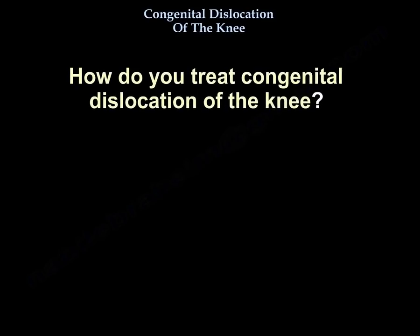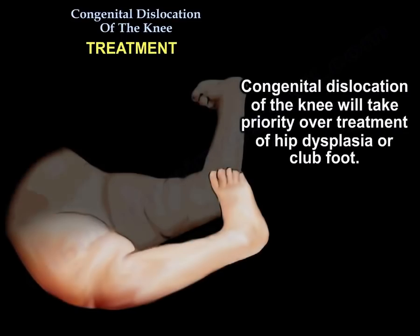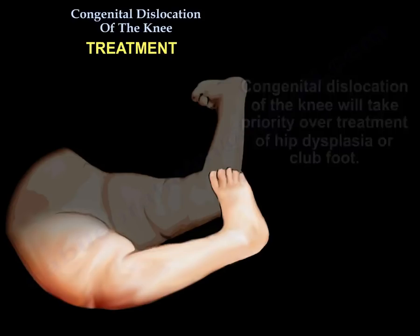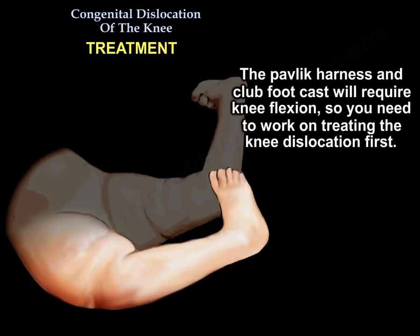Congenital dislocation of the knee takes priority over treatment of hip dysplasia or club foot, because the Pavlik harness and the club foot cast both require knee flexion. So you need to treat the knee dislocation first.